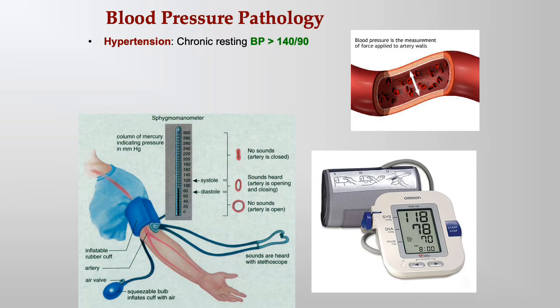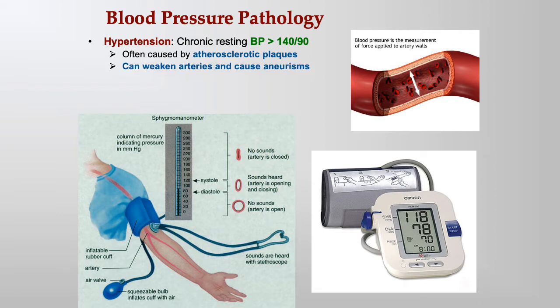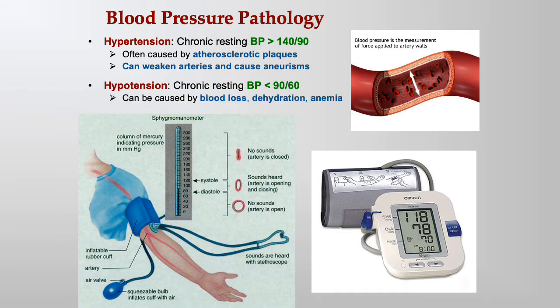Hypertension is a resting blood pressure greater than 140 over 90, often caused by atherosclerotic plaques that build up inside arteries, narrowing the lumen and raising pressure. High pressure can also weaken arteries and cause aneurysms. Hypotension is below 90 over 60. Blood loss, dehydration, and anemia can all lower blood pressure further, potentially preventing enough blood from reaching the tissues.